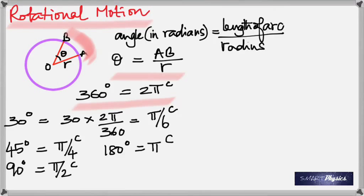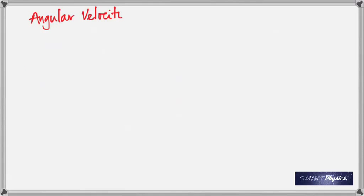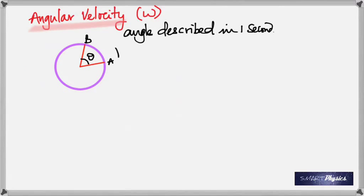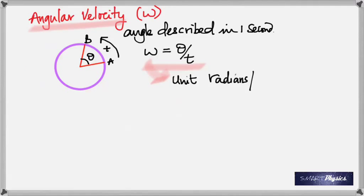This is called angular velocity. The symbol for angular velocity is omega — written as W but it's omega. Omega equals theta over T, defined as the angle described in one second. The unit is radians per second, because angle is in radians and time is in seconds.